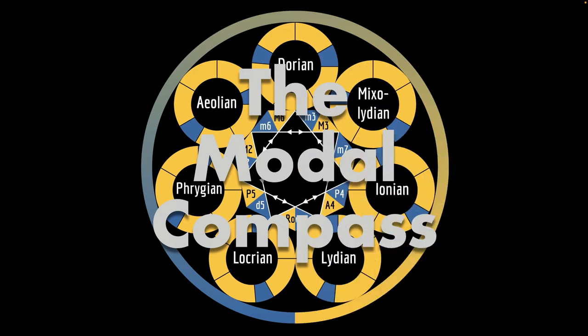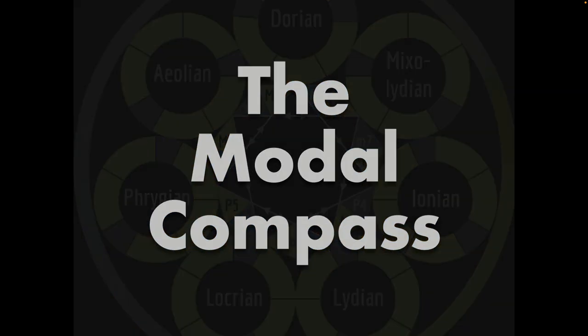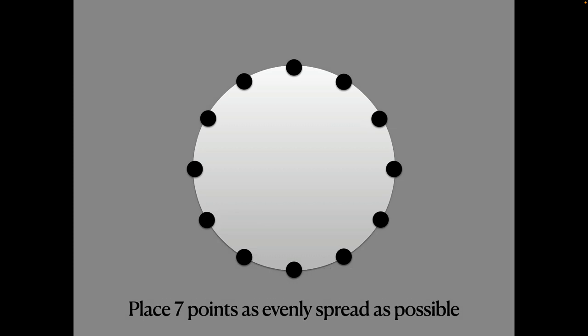Our first question might and should be: why are there modes at all? To understand this, let's look at this challenge. Imagine a circle with 12 nodes and your job is to place seven points along it wherever you like, but as evenly spread as possible, so as far apart from each other as you can make them.